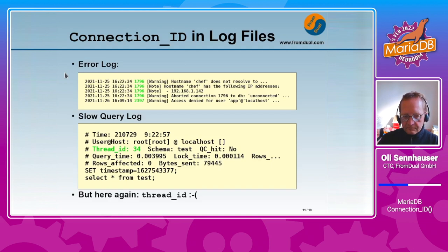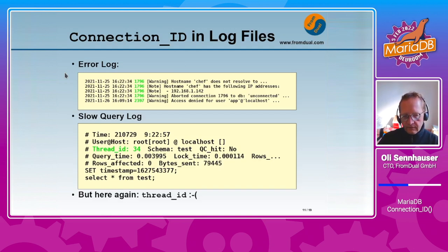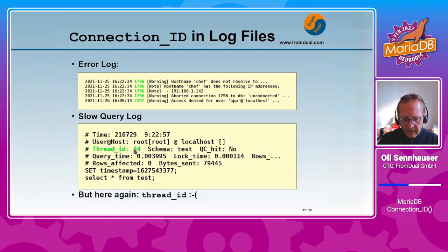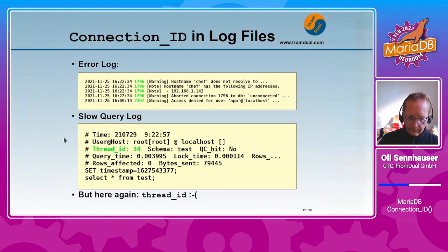Then the next thing is in the slow query log. Here in the slow query log we also see the connection ID — here connection ID 34. Unfortunately it's called thread ID and not connection ID, but we just have to rename the column in our mind.